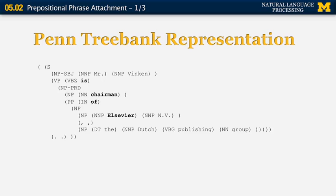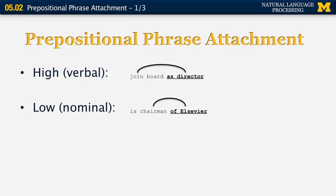The second sentence of the Penn Treebank is: Mr. Winken is chairman of Elsevier-NV, the Dutch publishing group. So the prepositional phrase here is 'of Elsevier-NV.' The preposition is 'of.' So where does this one attach? Does it attach to the nearest noun — specifically 'chairman' — or does it attach to 'is'? Prepositional phrase attachment is the problem of automatically figuring out this attachment.